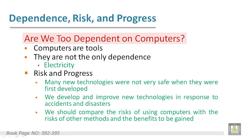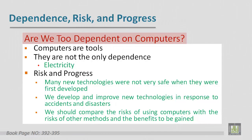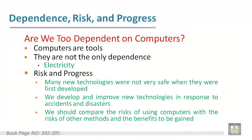Here is a question: Are we too dependent on computers? The answer in most cases is yes. Computers are tools, but they are not the only dependence — consider electricity, for example; we cannot live without electricity. Regarding risk and progress, we have to develop and improve new technologies in response to accidents and disasters, and we should compare the risks of using computers with the risks of other methods and the benefits to be gained.